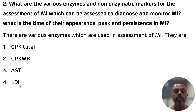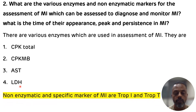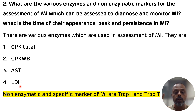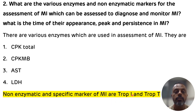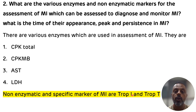What are the non-enzymatic specific markers for the diagnosis of MI? There are two markers to remember: troponin I and troponin T. These are the specific markers for the diagnosis of MI. If the question asks what are the specific markers for the diagnosis of MI, you have to write that troponin I and troponin T are the specific markers of MI.